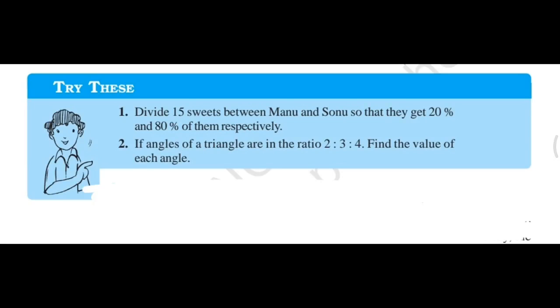This is question number 2: If angles of a triangle are in the ratio 2:3:4, find the value of each angle. One by one we will solve this. According to the ratio, how can we divide the angles or divide things according to the ratios? This we will come to know after doing this question.